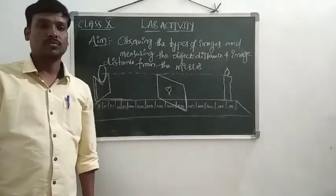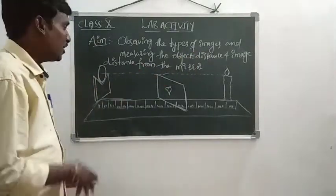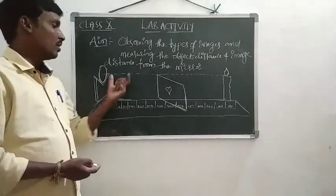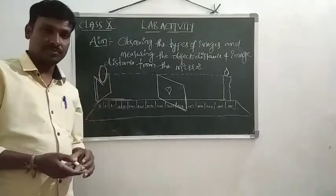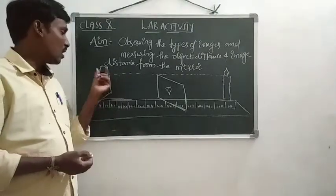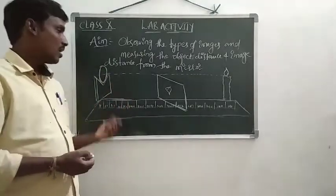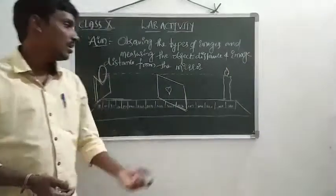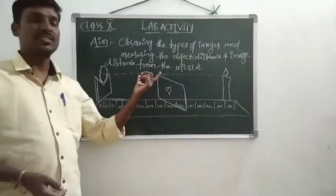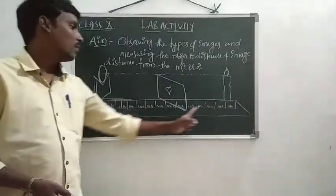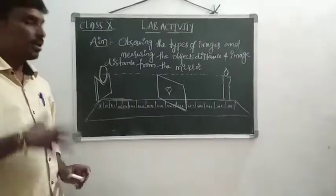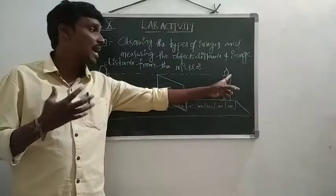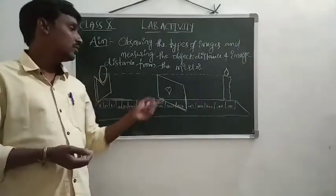The materials required for this activity are: one concave mirror of known focal length, one candle — the flame of the candle acts as the object — one paper that acts as a screen, and one meter scale to measure the object distance and image distance from the mirror.